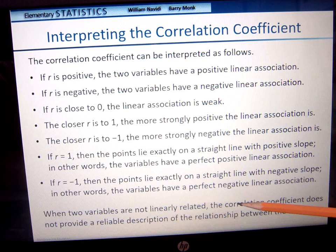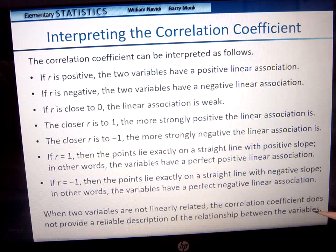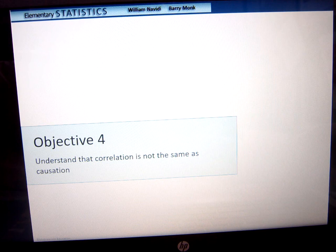If two variables are not linearly related, the correlation does not provide a reliable description of the relationship between the two. If it's curved when you put it on there and you see a curve with the points, that's something different that we will actually look at after this chapter.